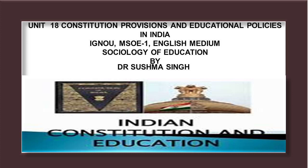List 3, the Concurrent List. Entry 20 has an indirect but significant bearing on education and is concerned with economic and social planning, education planning being an essential element of economic and social planning. The Government of India and the state governments are to work together in preparing and implementing the national plans for the reconstruction of education. Entry 25 covers vocational and technical training of labour.